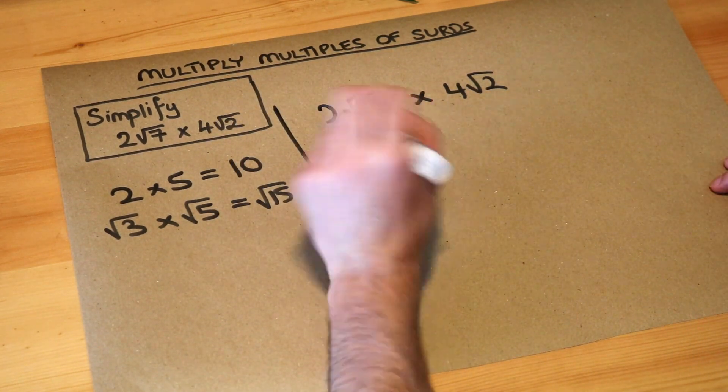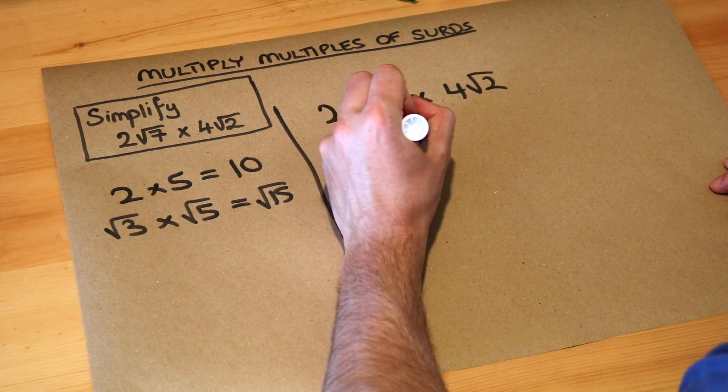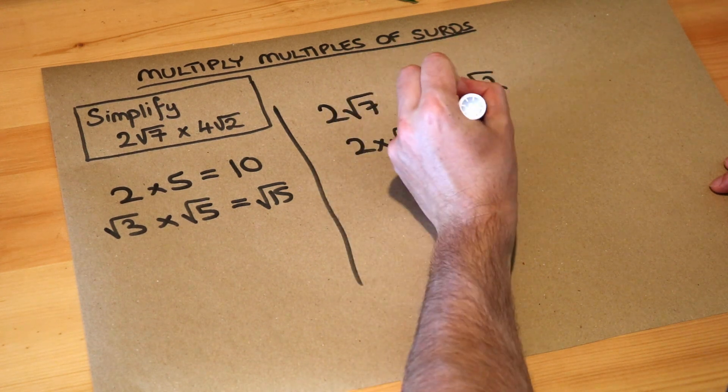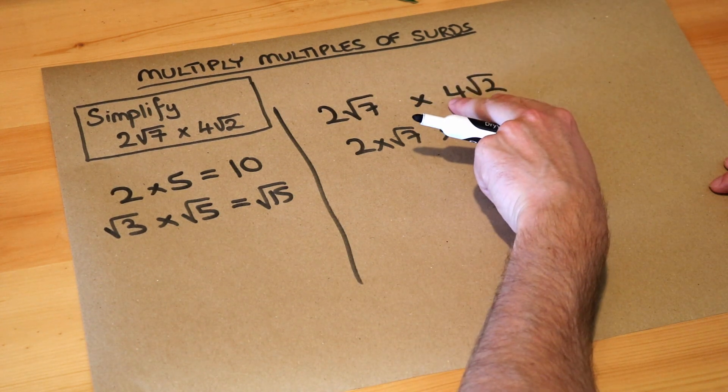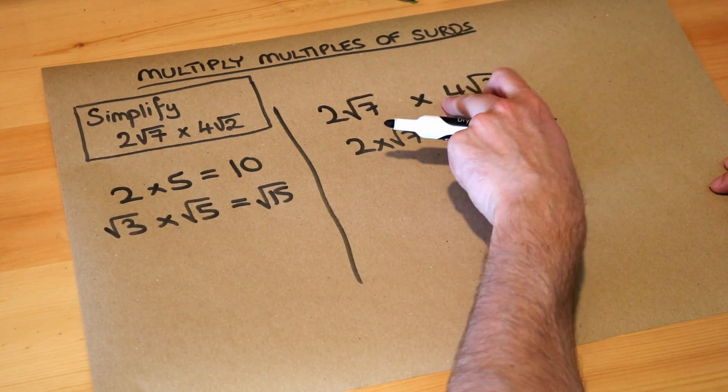Now two root seven just means two times root seven, and four root two just means four times root two. When they're next to each other it just means they're multiplied together - four lots of root two, four times root two.